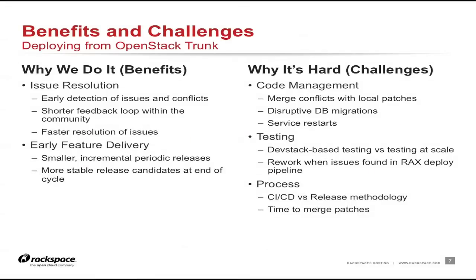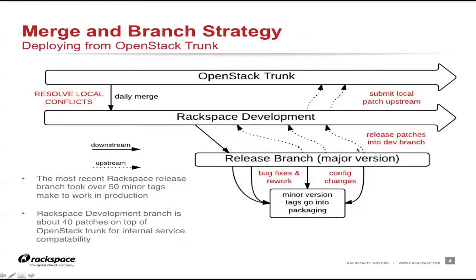So why do we do it? Issue resolution is a big part of it. We want to find issues faster, make the community aware of them, and shorten the feedback loop. Ideally, before we pull code into our internal branch, we'd like to catch those issues upstream so we don't have to spend time patching the branch internally and then submitting patches back up. Right now we fix issues internally and then have to submit those patches all the way up to trunk, which makes the feedback loop really long.